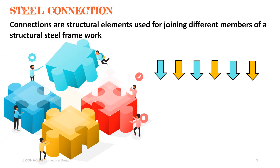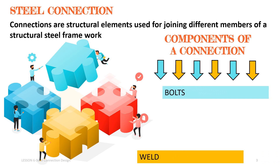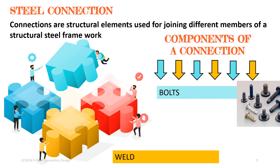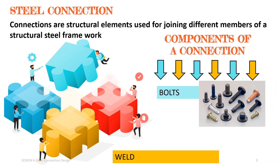Connections are structural elements used for joining different members of a structural steel framework. There are bolts and weld connections. A bolt is a metal pin with a head formed at one end and shank threaded at the other in order to receive a nut. The bolted joint is among the most common joining methods. The primary components of a bolted joint include the threaded fastener as well as the parts to be joined together.